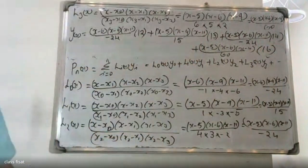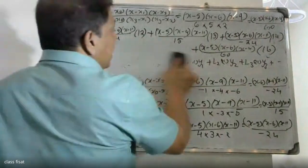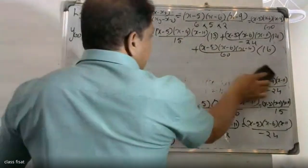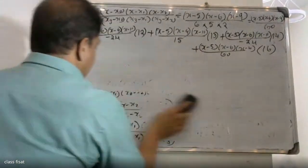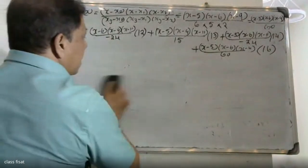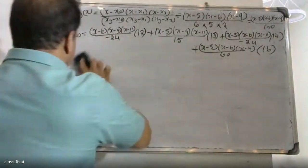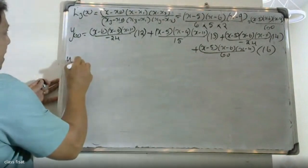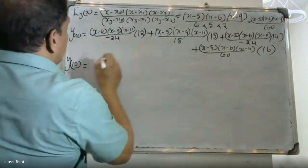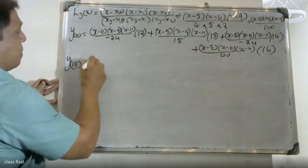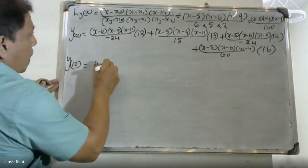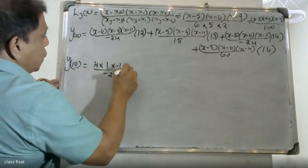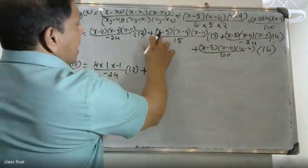Now y of x is equal to y of x, and we will see x value 10. Substituting x=10: y(10) = (10 minus 6)(10 minus 9)(10 minus 11) divided by minus 24 into 12, plus the next terms.